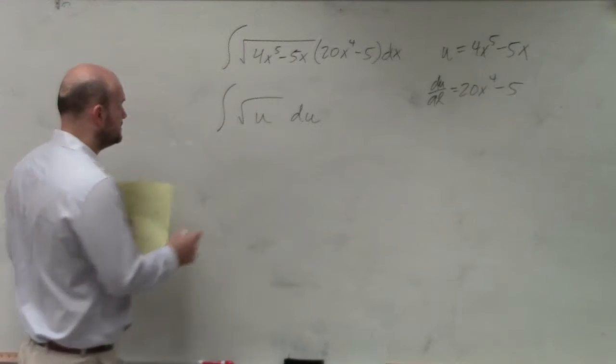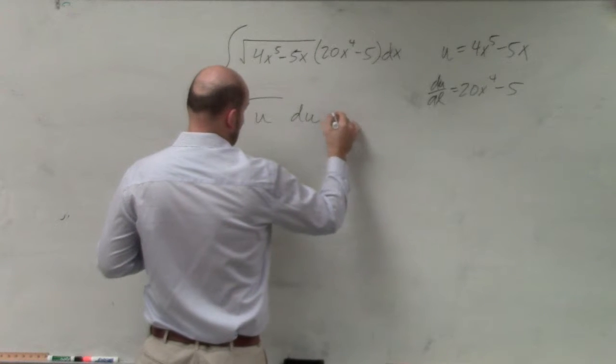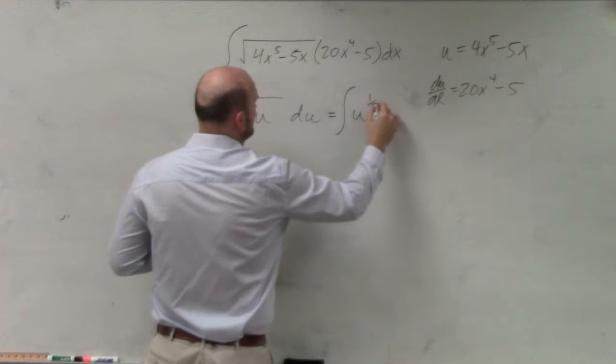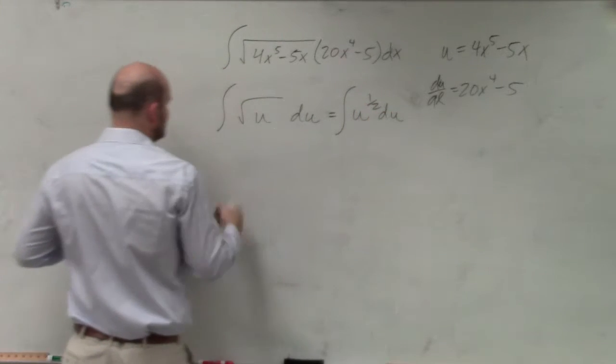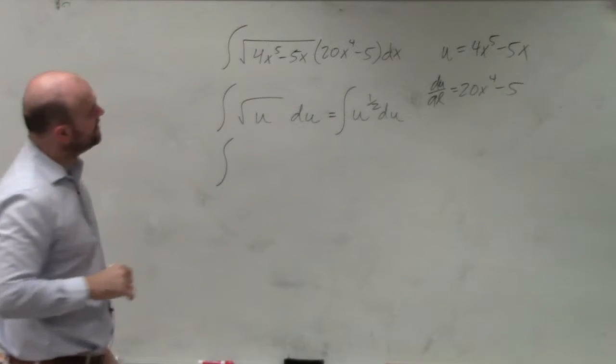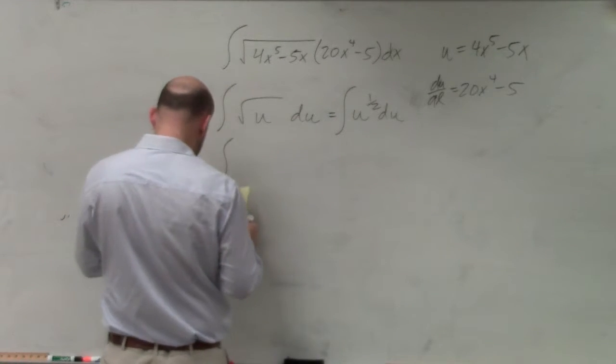So now we just need to integrate this, which I can go ahead and rewrite as integral of u to the 1 half du. So when I go ahead and integrate this, I'm going to basically be adding 1, which is going to be 3 halves, divided by 3 halves, which is going to be multiplying by 2 thirds.